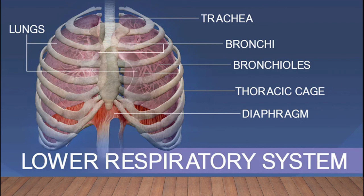Terminal bronchioles divide into respiratory bronchioles, which give rise to alveolar ducts. These alveolar ducts are tiny air-filled chambers and are the major sites where gas exchange occurs between air and blood. About 700 million alveoli are present in the lungs. The wall of each alveolus is 0.1 micrometers thick. The lining of the alveolar ducts is made of moist squamous epithelium — thin, flattened cells that facilitate diffusion and gas exchange.